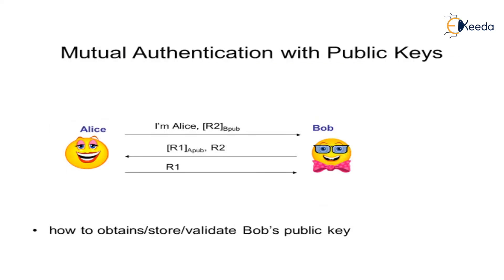This is an example of mutual authentication with public keys. Alice and Bob want to communicate. Alice sends a message R2 to Bob encrypted with Bob's public key. Bob replies back to Alice with the message received from Alice and a new message R1 encrypted with Alice's public key. Alice then replies back to Bob with the received message, and hence they mutually authenticate themselves with each other's public keys.